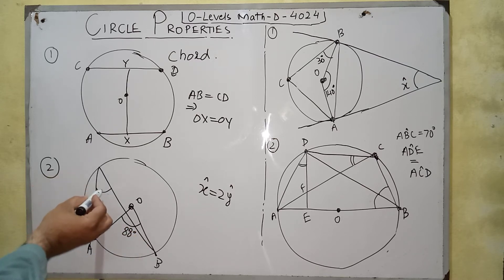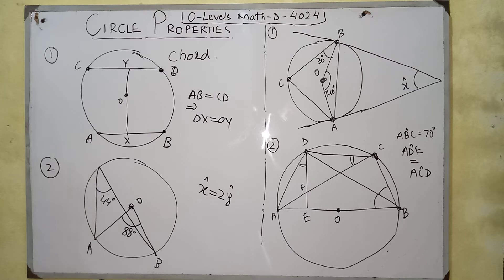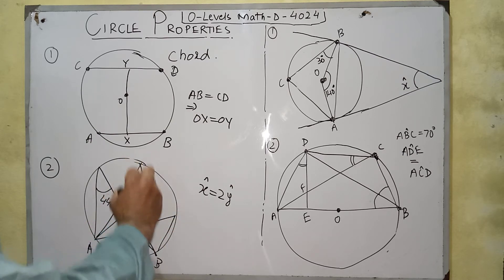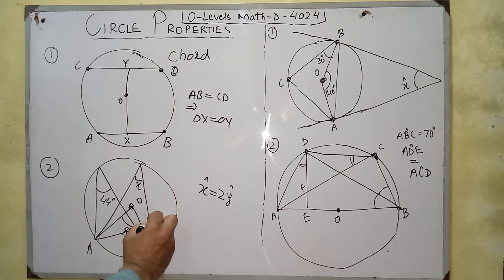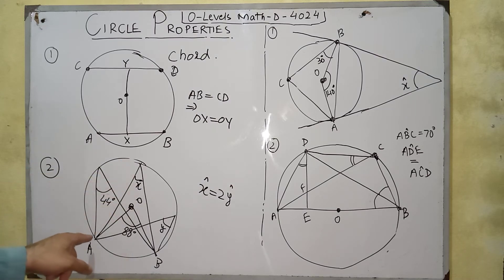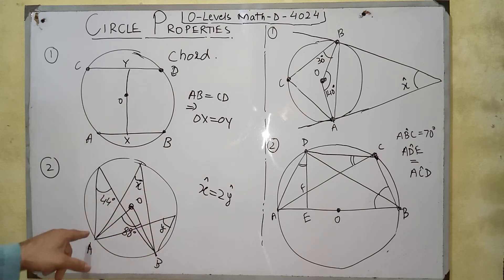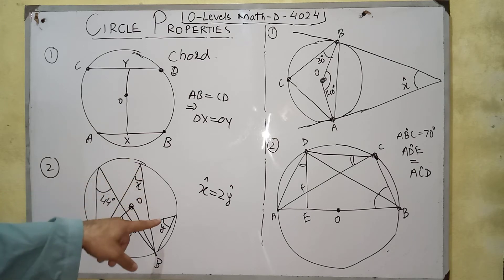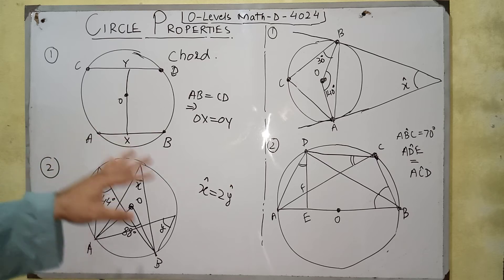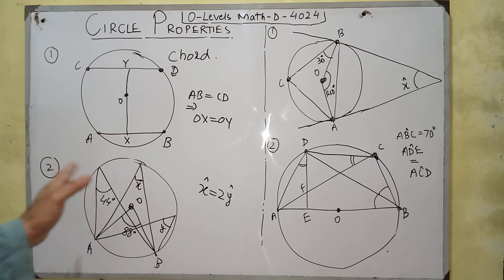For example, if the angle at the center is 88 degrees, the angle at the circumference will be 44 degrees. Also, if the same arc subtends multiple angles at the circumference, all those angles will be equal. For instance, if arc AB subtends angles at several points on the circumference, all those angles — say angle X and angle Y — will be equal.